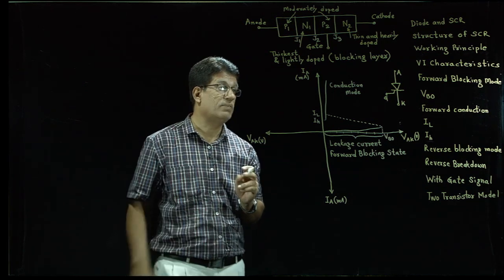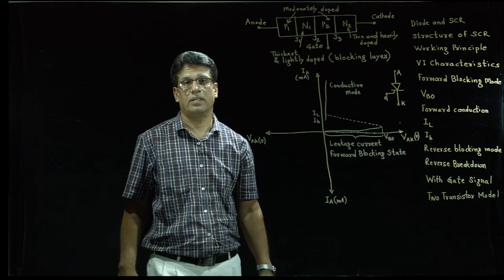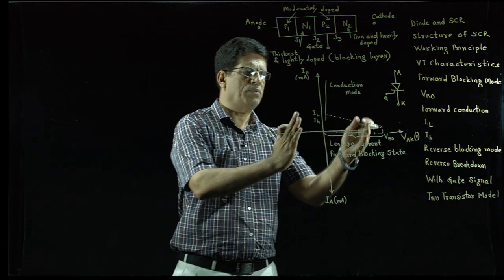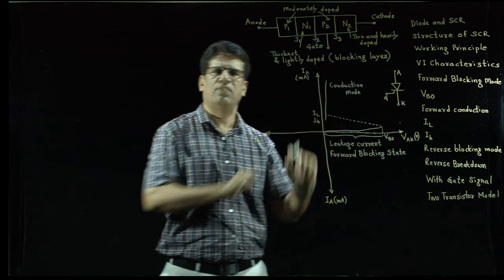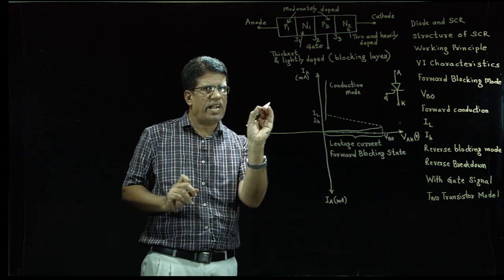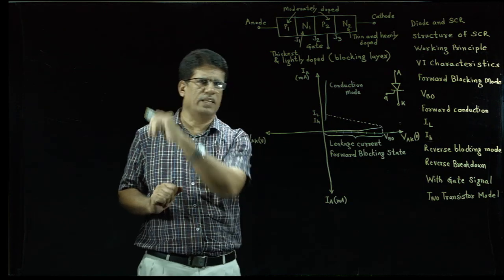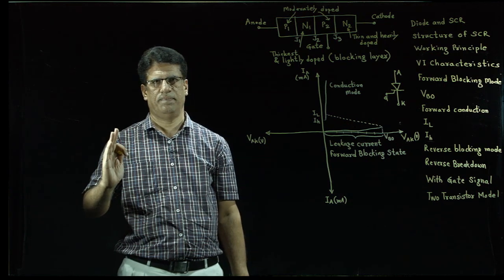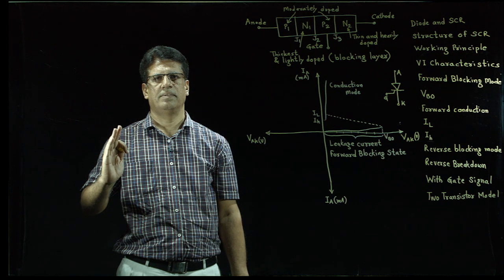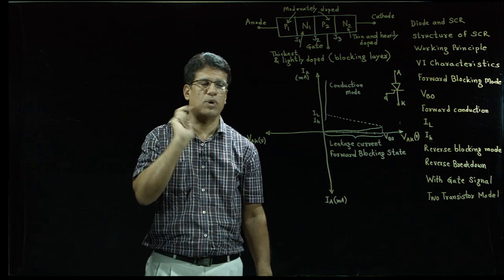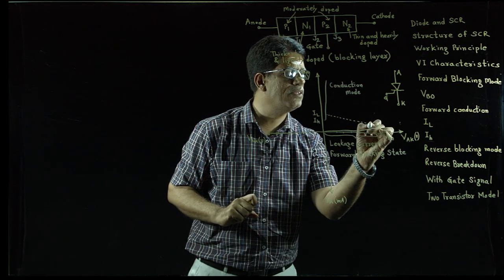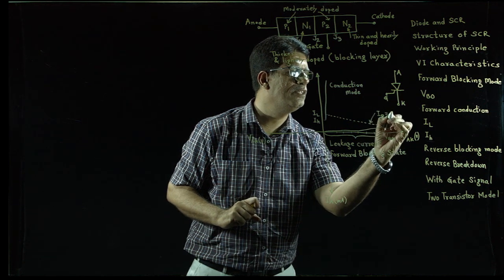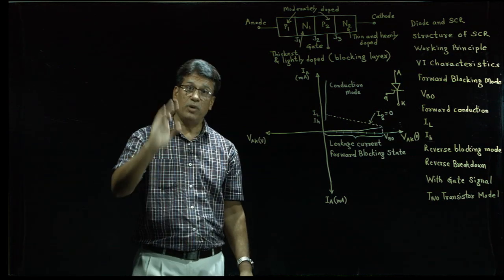One important parameter is VBO. As you can see from the V-I characteristic graph, exactly at the VBO value the SCR starts conducting. We can define it simply as the minimum voltage required to turn on the SCR without gate signal — that is very important. Here the gate signal is maintained at zero; IG is zero as far as VBO is concerned.